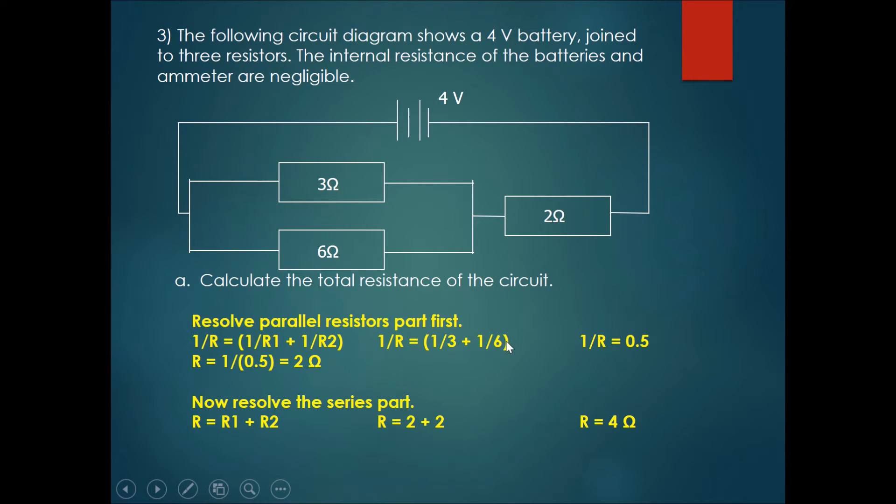1 over 3 plus 1 over 6 gives you 1 over 2 which is 0.5. So 1 over R gives you 0.5. R will be 1 divided by 0.5 is 2 ohms.